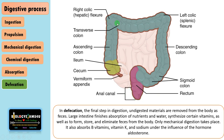Only mechanical digestion takes place in the large intestine as there are no digestive enzymes, though some digestion occurs with the help of bacteria present in the large intestine. It is also involved in absorption of vitamin B, vitamin K, and sodium under the influence of the hormone aldosterone.